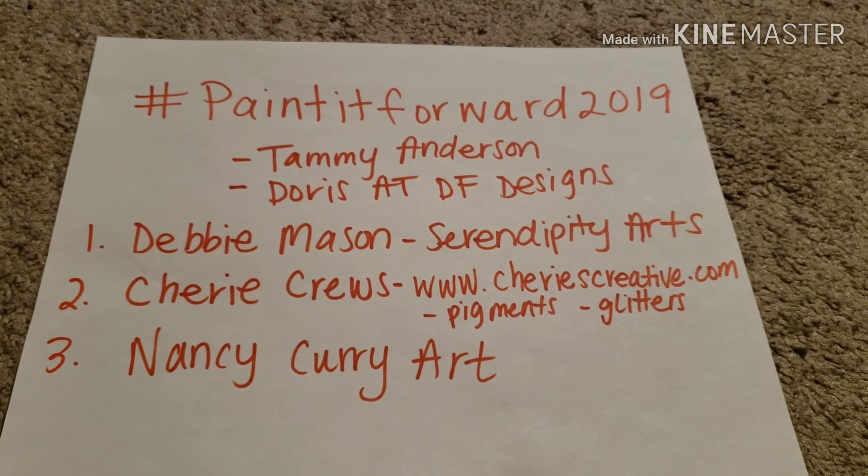So today we're going to be using Stone Coat Countertops Art Coat and it's a 1 to 1 ratio. I'm going to pour my part B into my cup first and for these I think I made 12 ounces of resin so I did 6 ounces of part B and 6 ounces of part A.